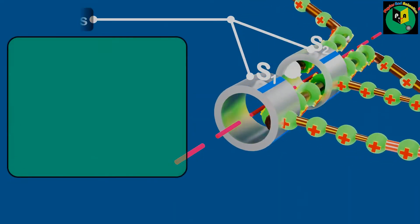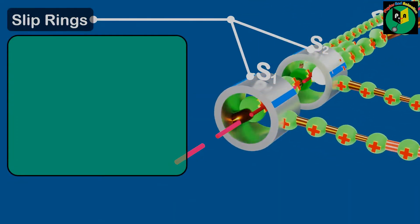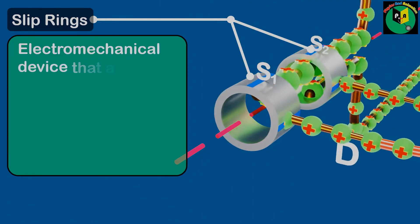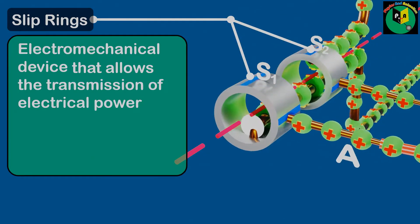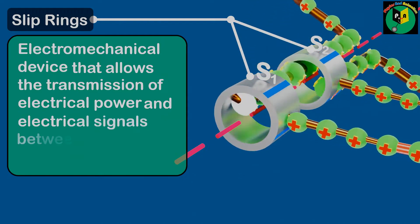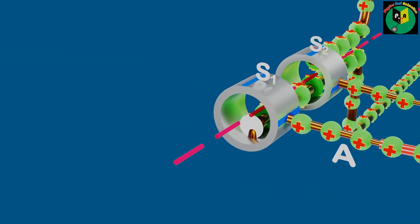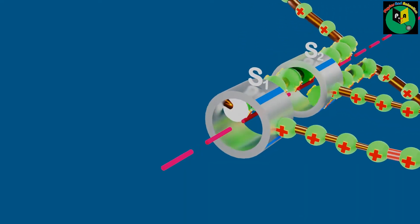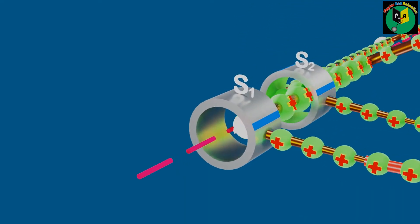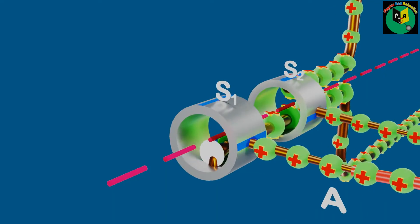Therefore, slip rings can be defined as an electromechanical device that allows the transmission of electrical power and electrical signals between a stationary and a rotating circuit. But still, it is not easy to get perfect contact between a simple wire and rotating slip rings.